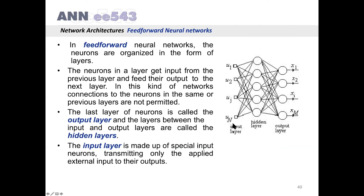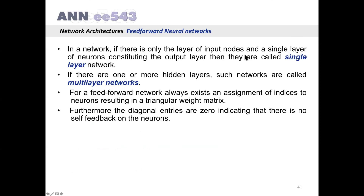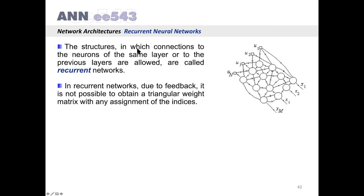The input layer is made of special input neurons transmitting only the applied external input to their outputs. In a network, if there is only the input layer and a single layer of neurons constituting the output layer, they are called single-layer networks. If there are one or more hidden layers, such networks are called multi-layer networks. For a feed-forward network, there always exists an assignment of indices to the neurons resulting in a triangular weight matrix, indicating that there is no self-feedback on the neurons.